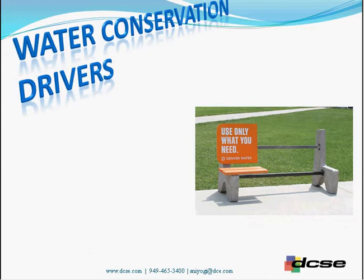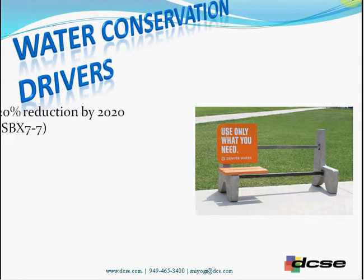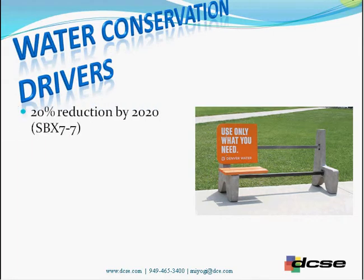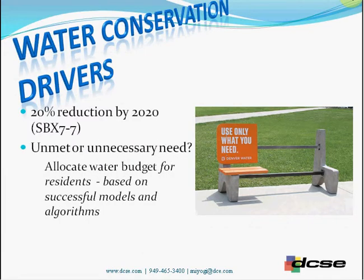So what is it that drives water conservation at your organization? Is it a regulation such as SBX 7-7, which talks about 20% reduction by the year 2020? Or is it more fundamental — where you ask yourself whether the need is an unmet need or an unnecessary need — which is when you allocate water budget for residents based on successful models and algorithms.